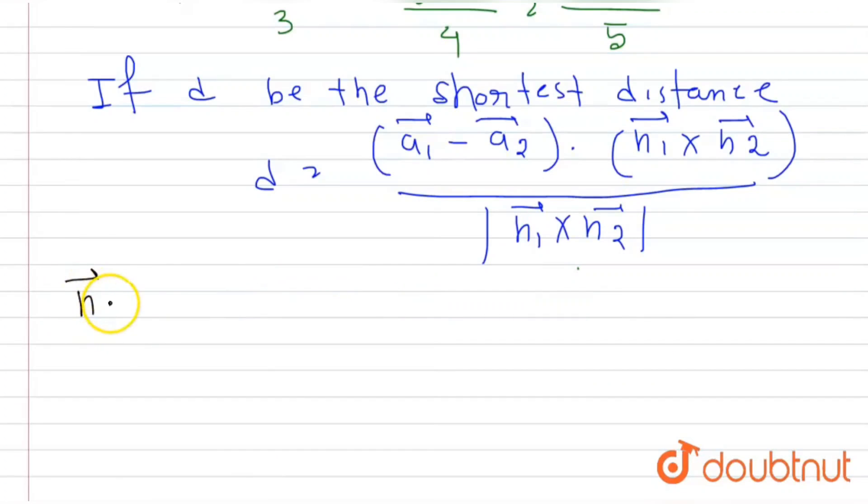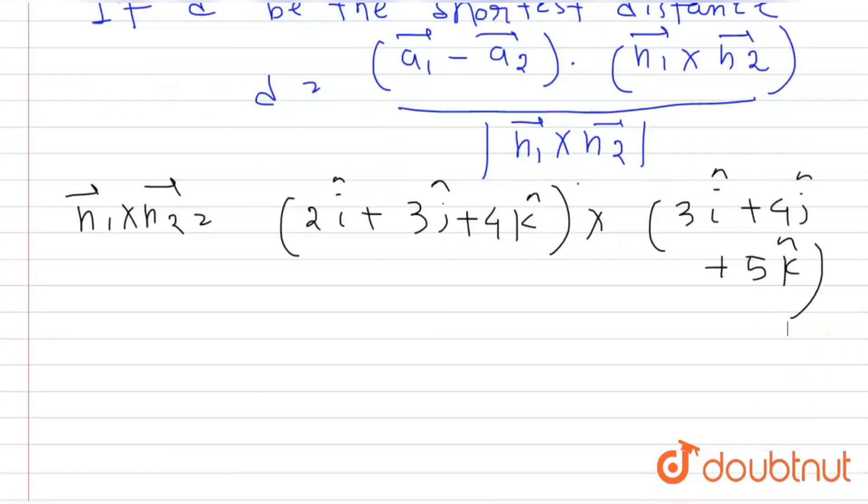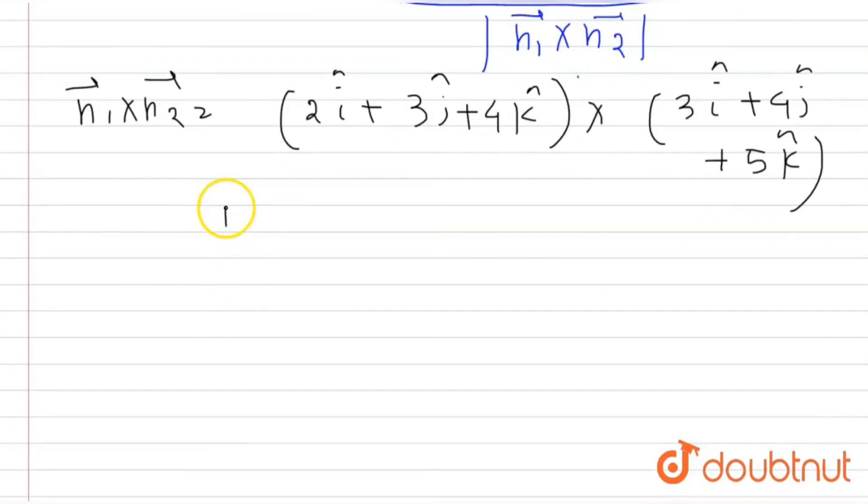Now n1 cross n2 will be the direction ratios of the first line cross the direction ratios of the second line, so 2i, 3j plus 4k cross 3i plus 4j plus 5k. Now if we cross multiply these two matrices, we will get i, j, k, 2, 3, 4, 3, 4, 5.